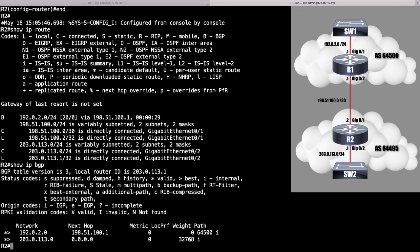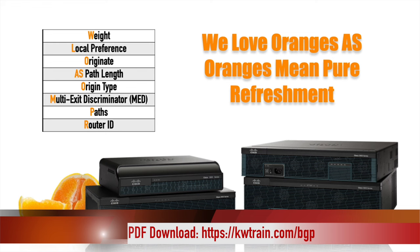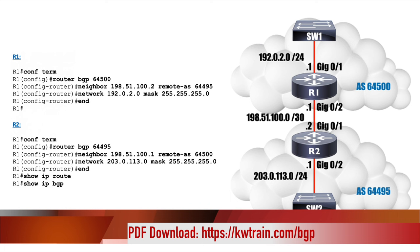Now that we've covered everything you need to know about BGP for the ENCORE exam, I want to give you a study resource. I've created a short PDF with the slide showing where those eight different path attributes appear in the output of the show IP BGP command, what each path attribute refers to, and the configuration from the BGP demo we just went through. The link is in the description below - just go to that link, give me your email, and I'll email that PDF right out to you. Thank you for joining me for this look at the ENCORE coverage of BGP. Until next time, stay safe and stay curious.